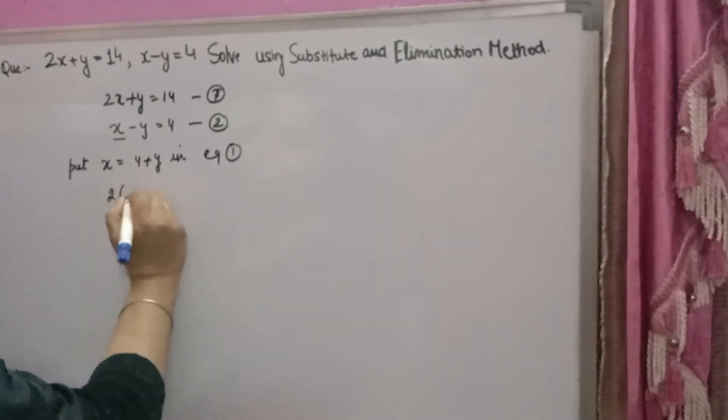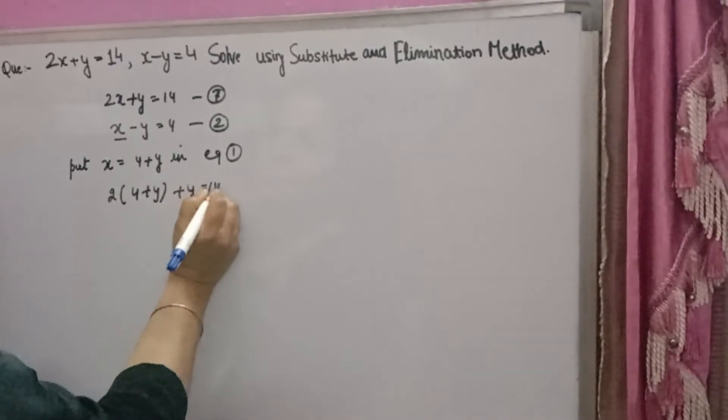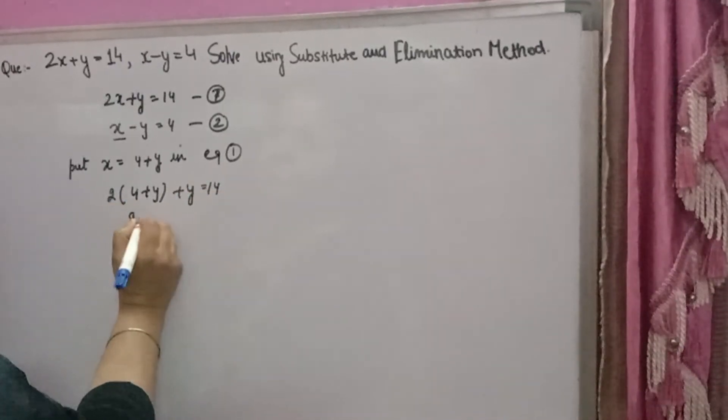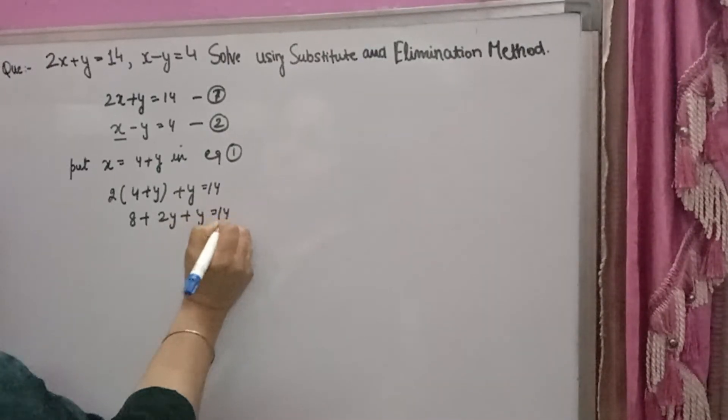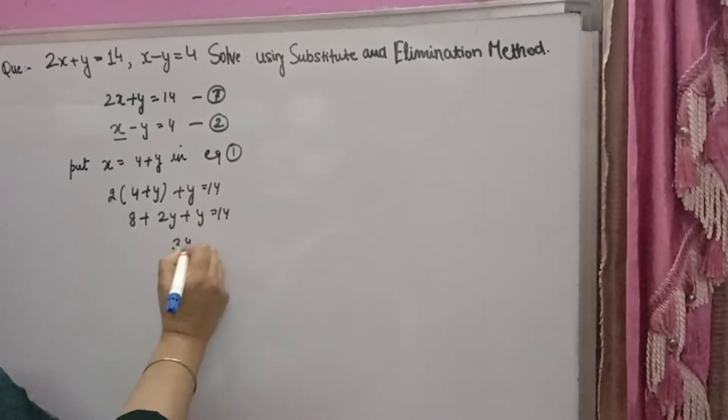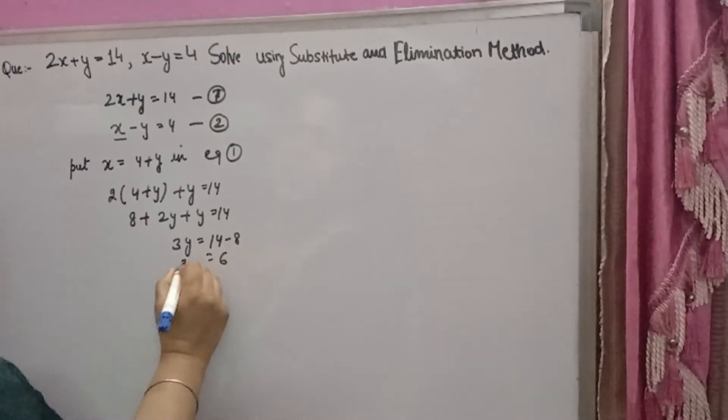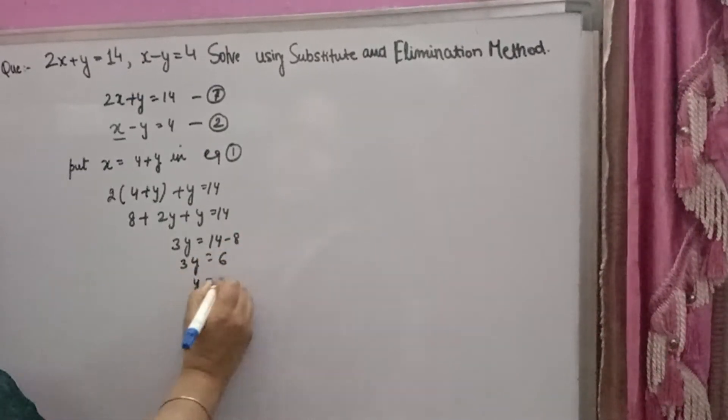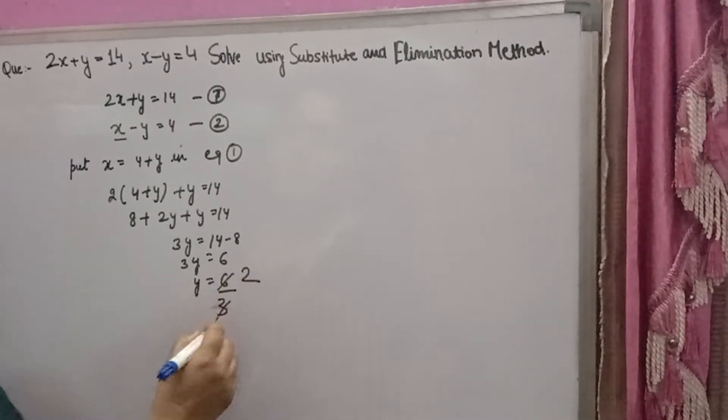You will get 2 times (4 plus y) plus y equals 14. 2 into 4 is 8, 2 into y is 2y, plus y equals 14. 2y plus y is 3y. 3y equals 14 minus 8, that is 6. 3y equals 6, so y will come 6 over 3, that is 2. Y value came 2.